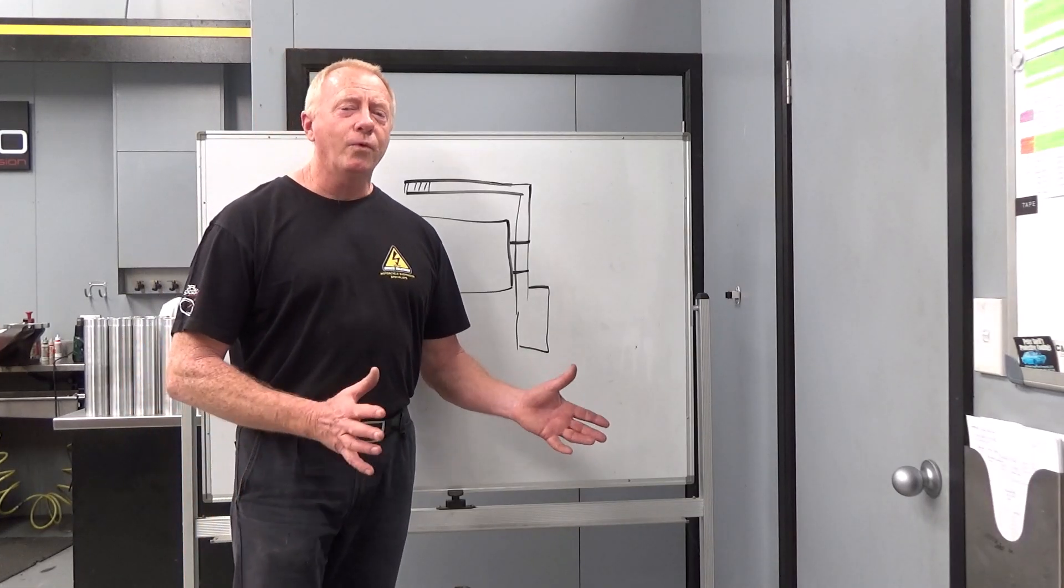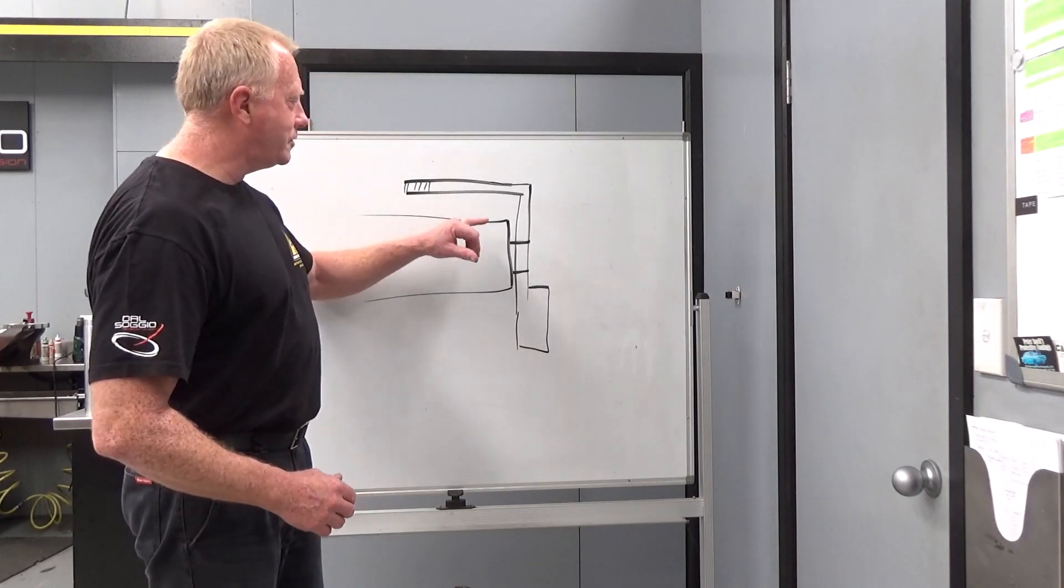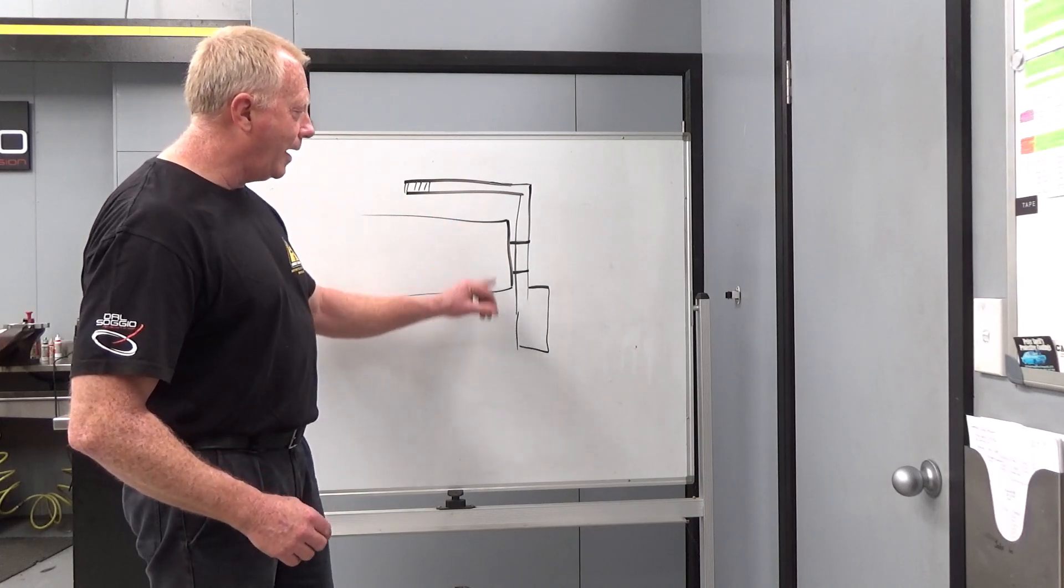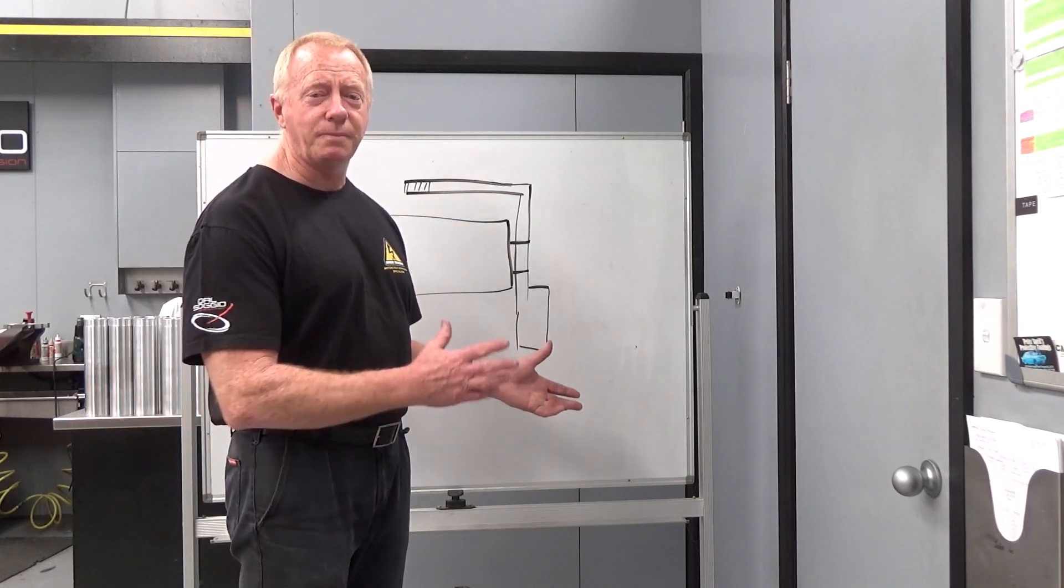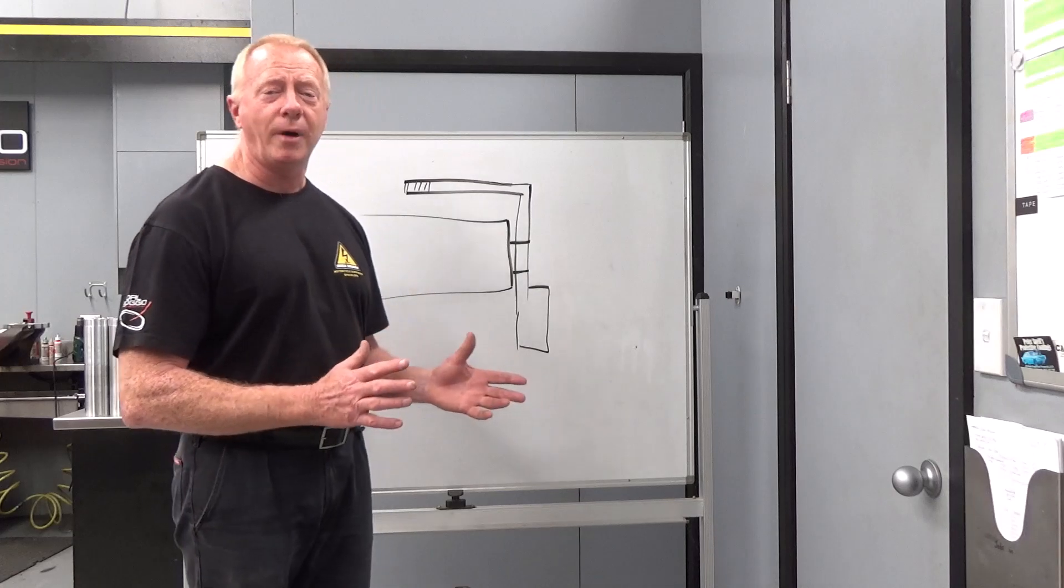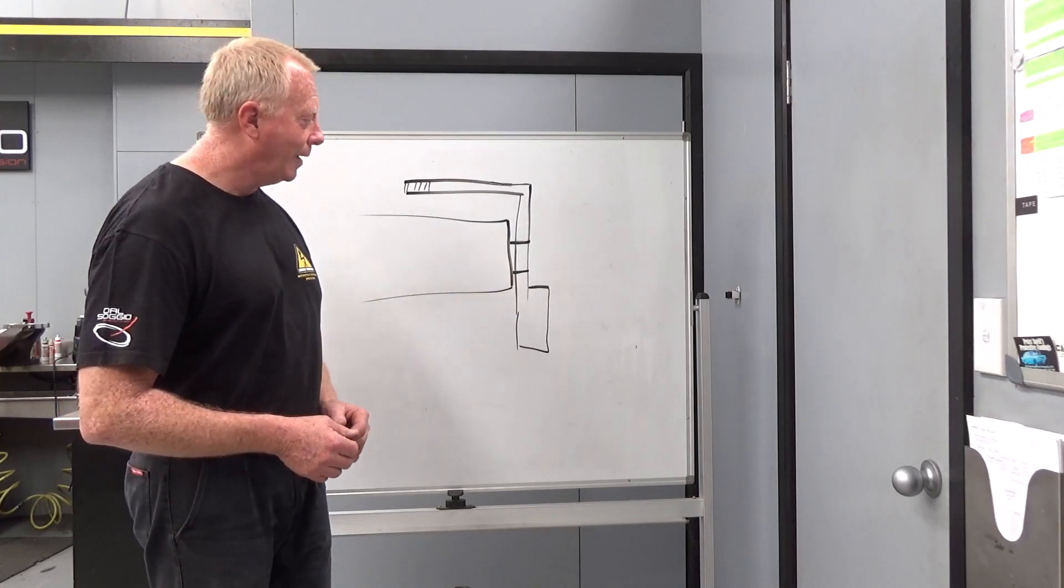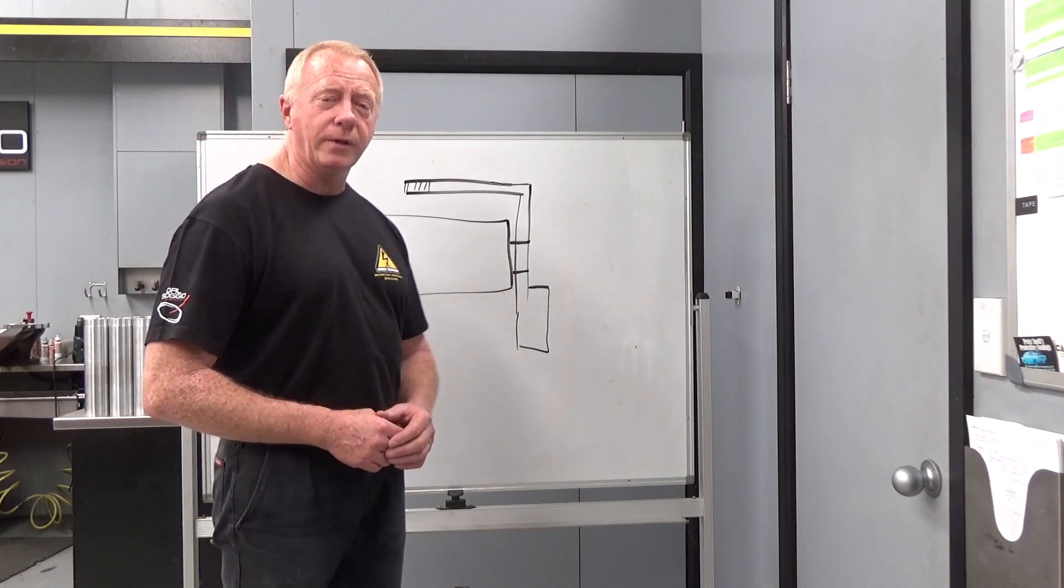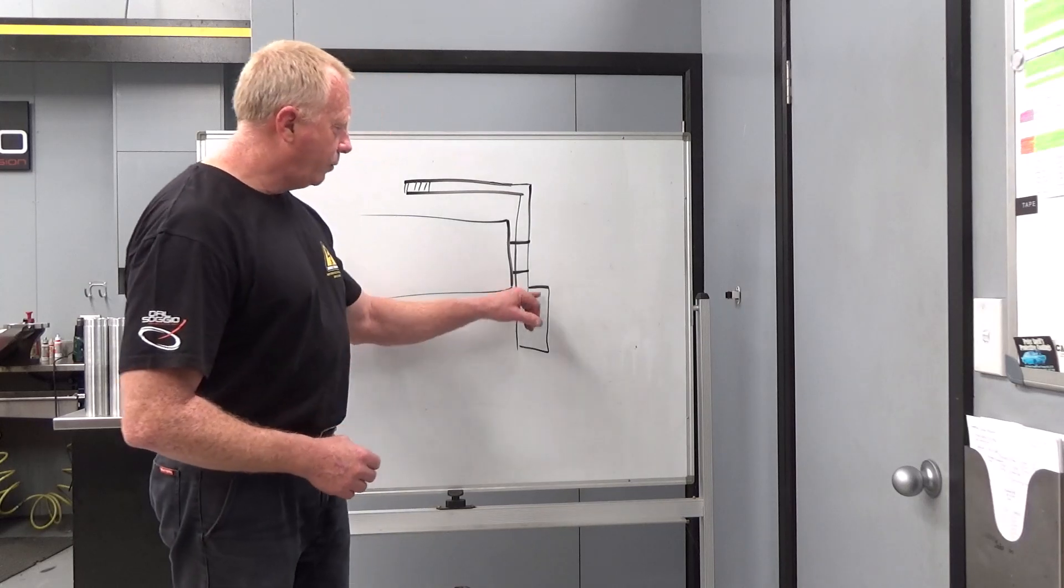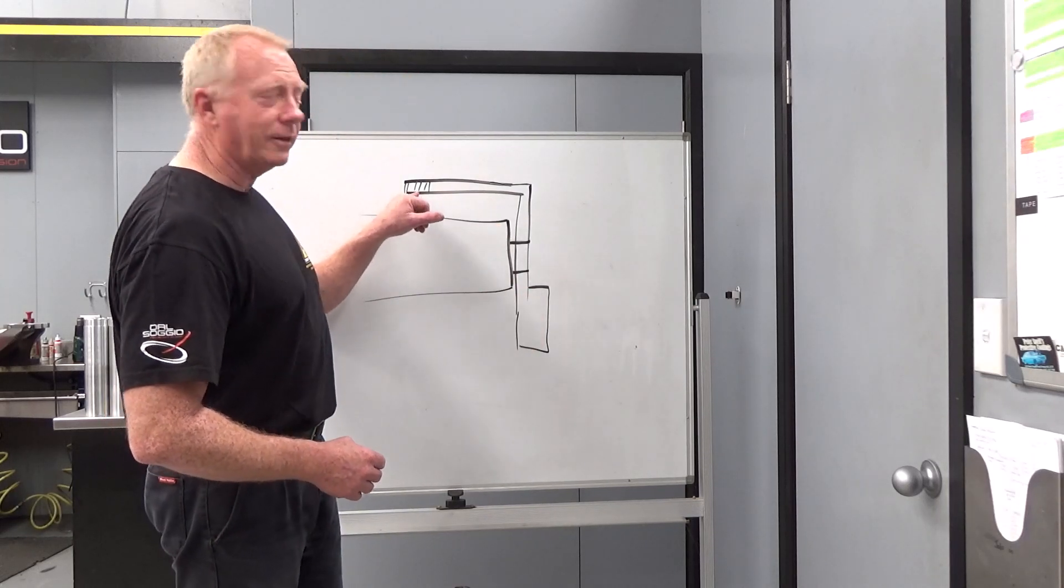Very simple drawing here. This is just a simple mechanism known as a tiller arm and a rudder. Generally, this mechanism will be used to steer a boat and to actually make a corner. Now, the difference between steering here and cornering will be the width of the rudder versus the length of the tiller arm.